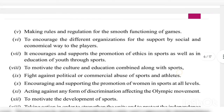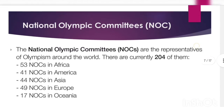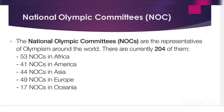Next, we discuss the National Olympic Committee — NOC. The National Olympic Committees are the representatives of Olympism around the world. There are currently 204 of them. Among these: 53 NOCs are in Africa, 41 in America, 44 in Asia, 49 in Europe, and 17 in Oceania.